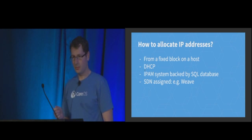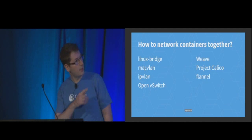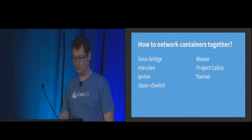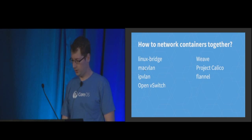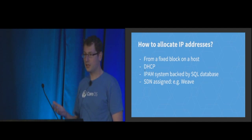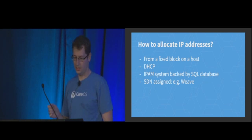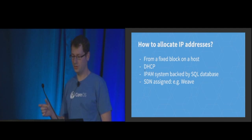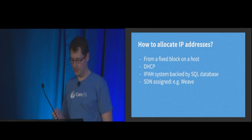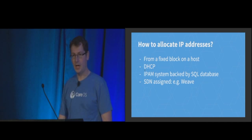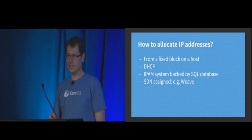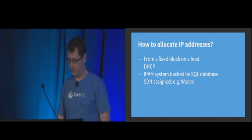Now let's think a bit more about writing these plugins. You have to use a layer-two network — for example, MacVLAN — to provide virtual layer-two networking. But then on top of it, you have to figure out a strategy to do IP allocation, and there are lots of ways to do that. You can configure a host with a static range and hand out IPs from that block. You can use DHCP, one of the oldest technologies for dynamically allocating IPs. There are also IPAM systems with an API backed by a SQL database that you might want to integrate with. Some SDN solutions will also do IP allocation — for example, Weave can do that for you.